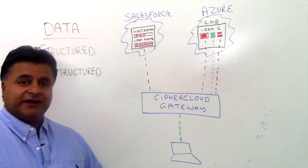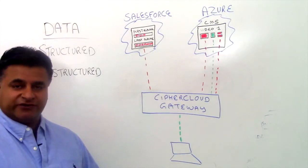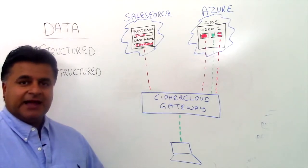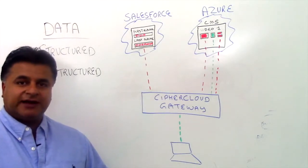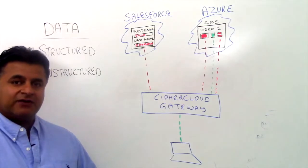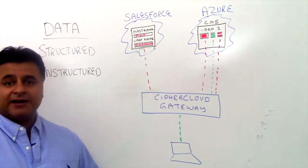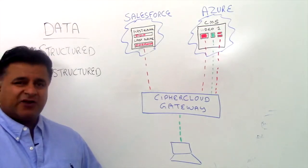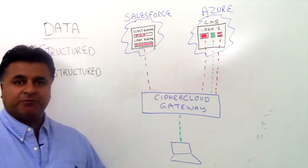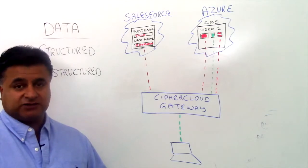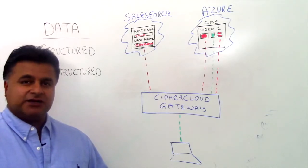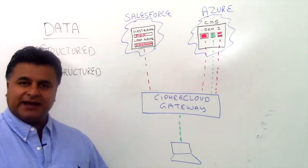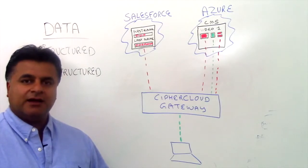In addition to structured data, we also support unstructured data. When we talk about unstructured data in the Cypher Cloud context, we talk about files. They could be any type of files — rich media files such as graphic files, documents, PDF, Excel spreadsheets, and so on.